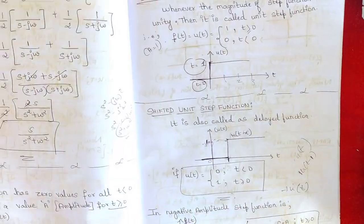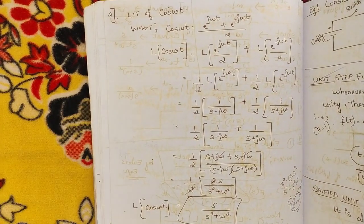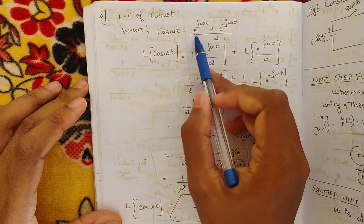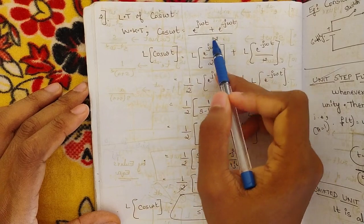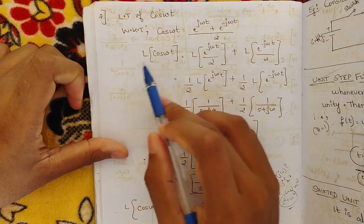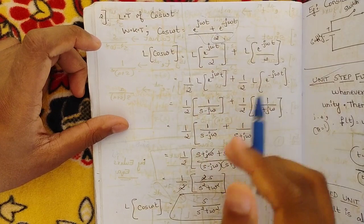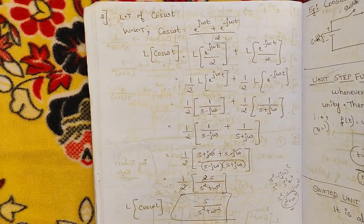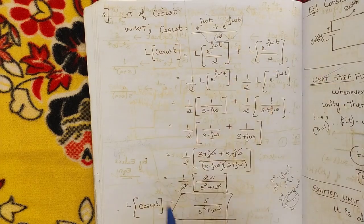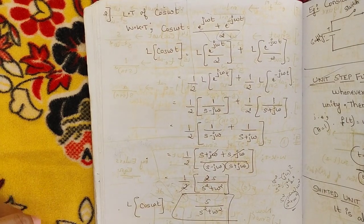Similarly, for cos(ωt), we use the identity cos(θ) = (e^(jθ) + e^(−jθ)) / 2. So cos(ωt) = (e^(jωt) + e^(−jωt)) / 2. Applying the Laplace transform in the same way and solving, you will get the answer s/(s²+ω²).